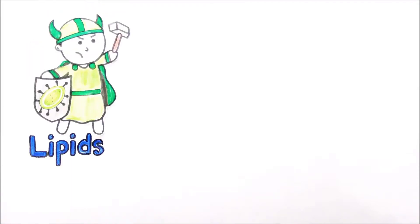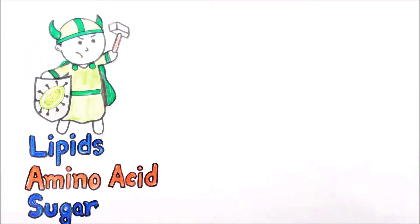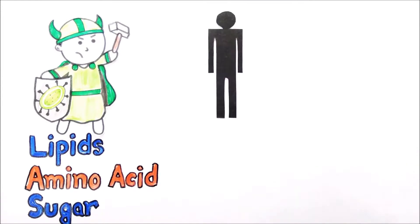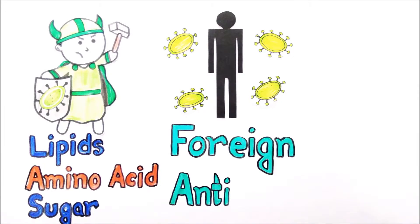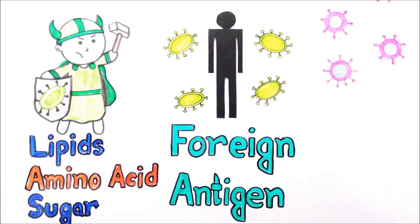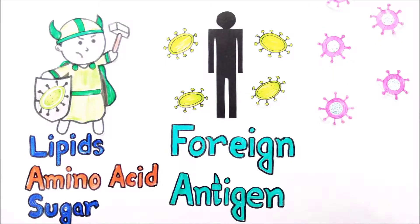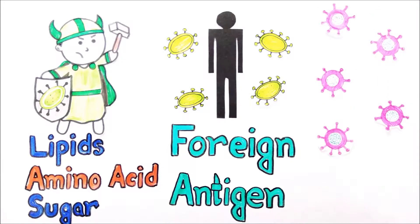Let us first know about the antigens. Antigens are usually made up of lipids, amino acids, or sugars. Basically, they are any sneaky foreign substance which tries to enter into your body. Such antigens are more specifically known as foreign antigens. Some examples of such foreign antigens are pathogens, viruses, and bacteria.